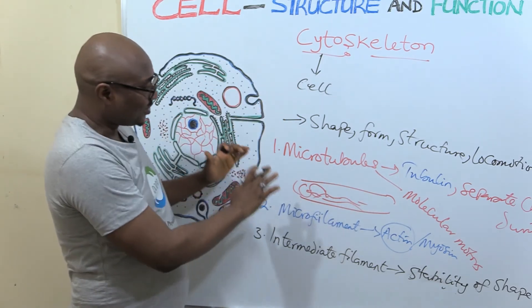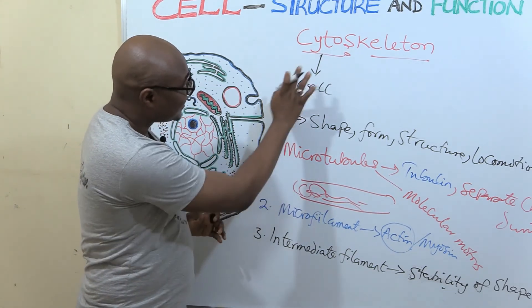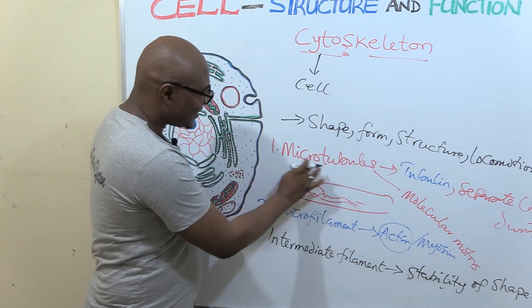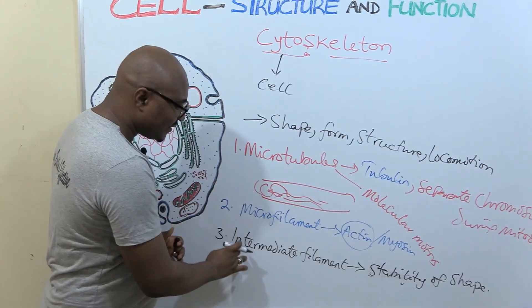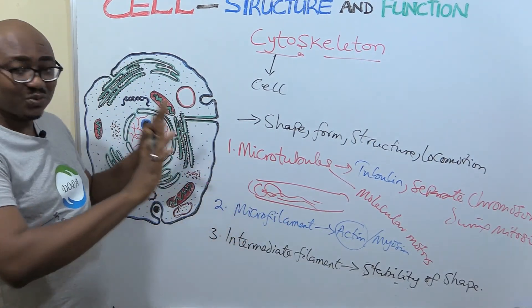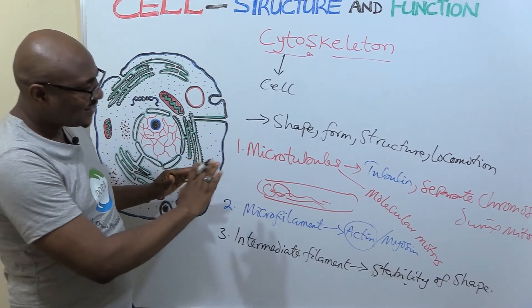But these are what you need to know about cytoskeletal elements, cytoskeleton, microtubules, microfilament, intermediate filaments. That's what they do. So meditate on it. Look at them.